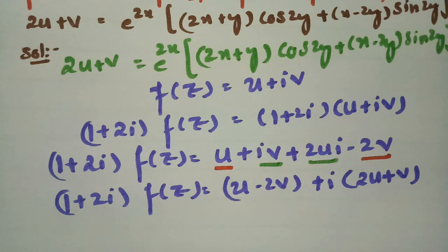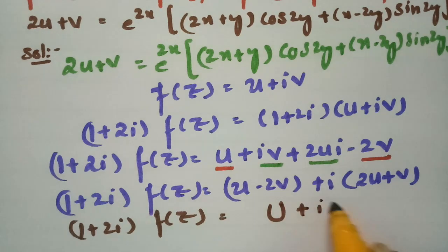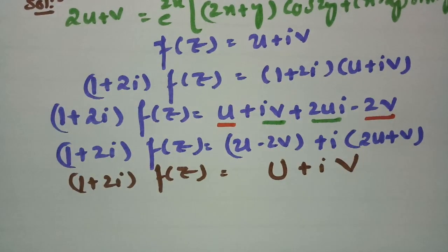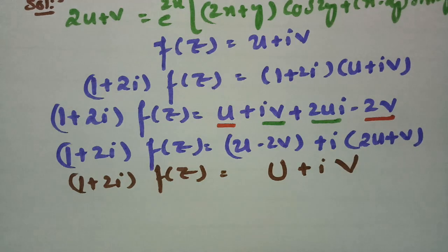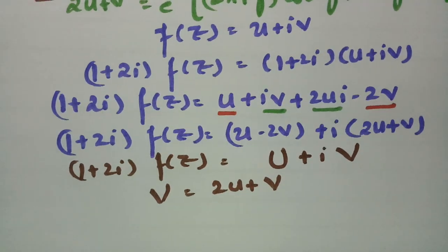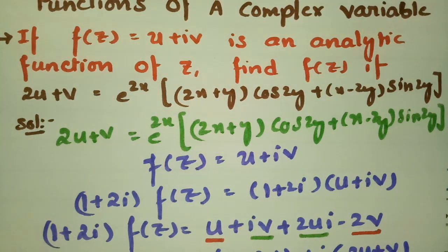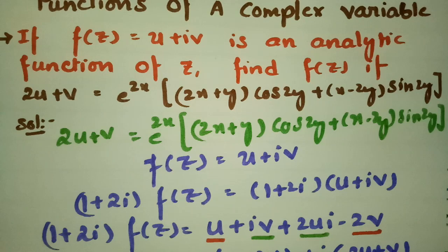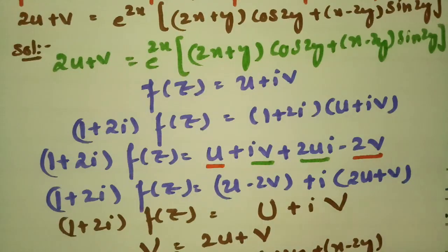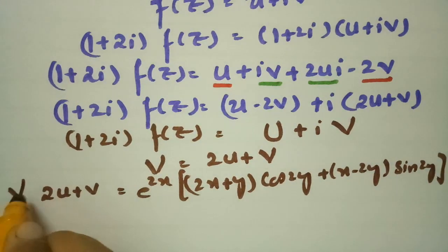I am considering this as (1 + 2i)·f(z) = U + iV, where V = 2u + v. From the question, 2u + v = e^(2x)·(2x + y)cos(2y) + (x - 2y)sin(2y). Now I am going to differentiate this capital V with respect to x as well as with respect to y.